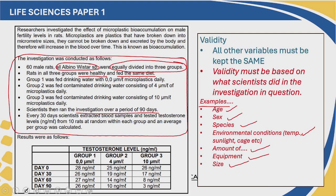In this example, males were tested for the amount of testosterone which indicated fertility. We could have kept the age the same because age would affect fertility — so keeping the age the same would increase the validity of our investigation. What about sex? This investigation was only conducted on male rats, so sex would not need to be kept constant because it's in our aim. The same species was already kept constant, so it would not be a way to improve validity. What environmental conditions were kept constant?